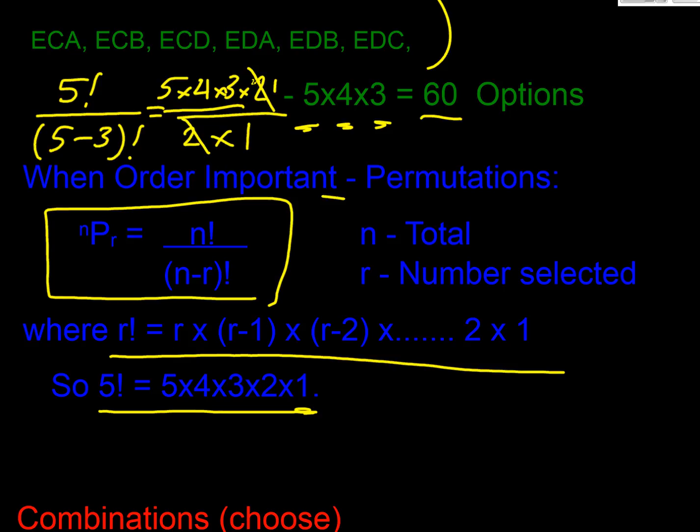When do we use it? When order is important. Here it was important who came first and who came second. And immediately we know order is important, we're going to use permutations.